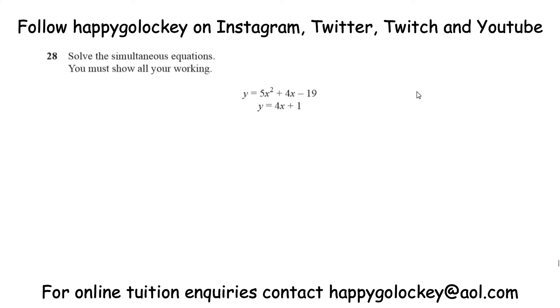The question goes as follows: Solve the simultaneous equations. You must show all your working. y equals 5x squared plus 4x minus 19 and y equals 4x plus 1.